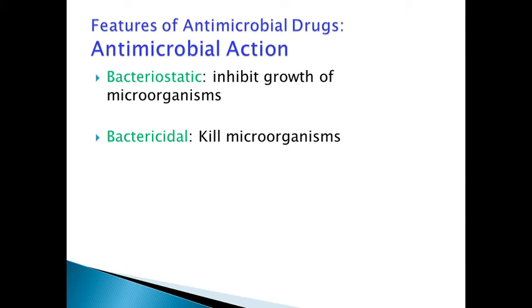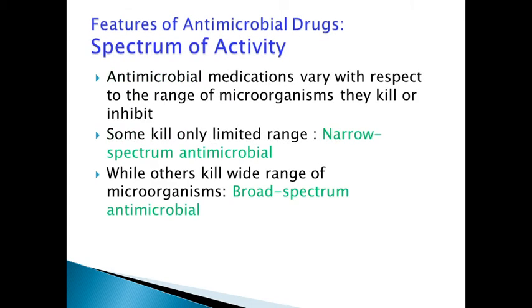The topic of antimicrobial action: there are two major types. One is bacteriostatic and another is bactericidal. Bacteriostatic antibiotics inhibit the growth of microorganisms, while bactericidal antibiotics actually kill the microorganisms. We must also know the spectrum of activity — antimicrobial medications vary with respect to the range of microorganisms they kill or inhibit. Some kill only a limited range and are called narrow-spectrum antibiotics, while others kill a wide range and are called broad-spectrum antimicrobial agents.